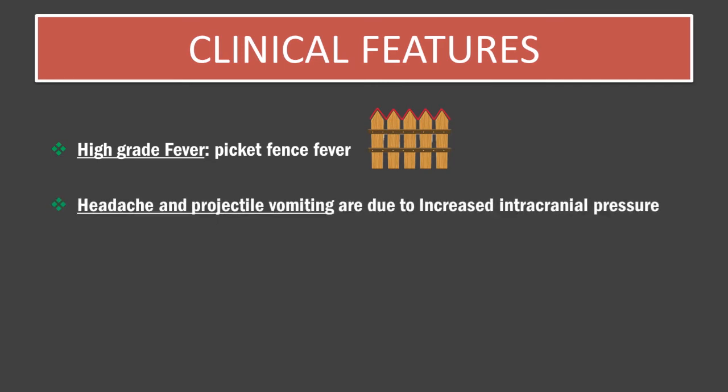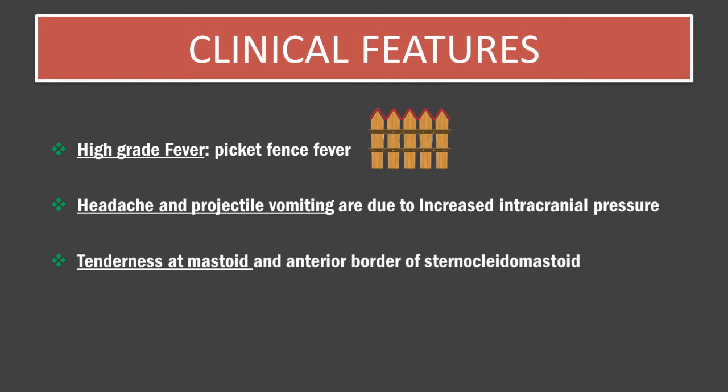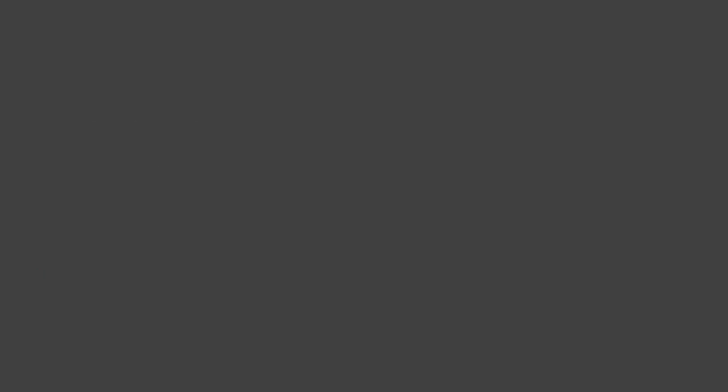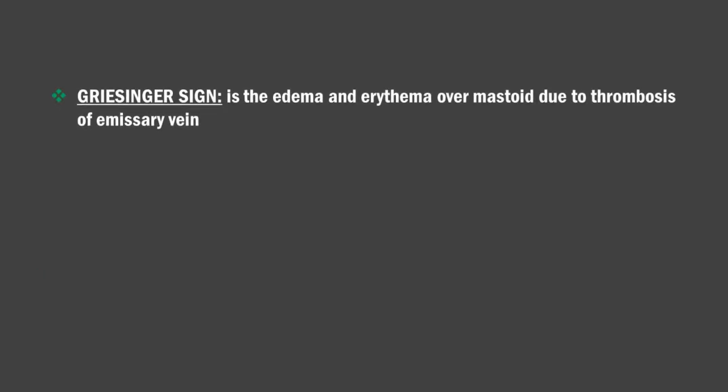Headache and projectile vomiting are due to increased intracranial pressure. There is tenderness over the mastoid and anterior border of the sternocleidomastoid. Griesinger sign is the dermal erythema over the mastoid due to thrombosis of the emissary vein.